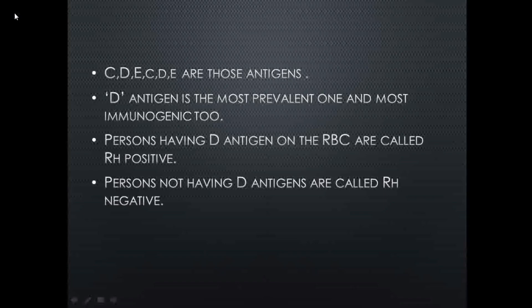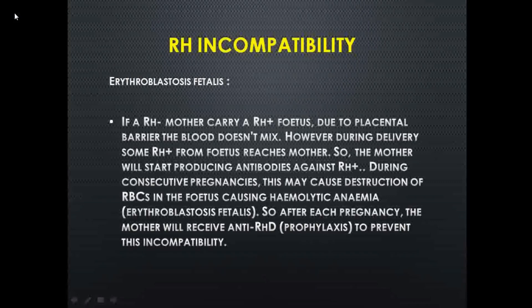Among these six major antigens, the D antigen is the most prevalent and also the most immunogenic. Persons who have the D antigen on their RBCs are called Rh positive, and if the D antigen is absent, that blood group is called Rh negative. This brings us to Rh incompatibility and the disease called erythroblastosis fetalis.